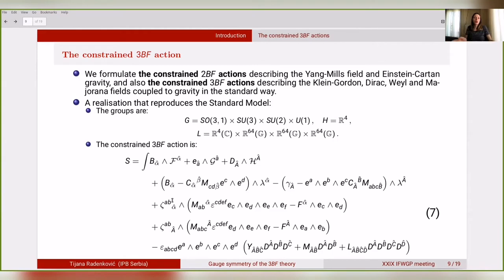Now that we formulated the 3-group that is responsible for the standard model coupled to gravity and the corresponding topological 3BF action, we have to impose the appropriate simplicity constraints on the variables present in the topological part of the 3BF action in order to obtain the desired dynamics of our fields. We formulate the constrained 2BF action describing the Yang-Mills fields and Einstein-Cartan gravity, and also the constrained 3BF actions describing the Klein-Gordon, Dirac, Weyl, and Majorana fields coupled to gravity in a standard way. This is the realization that reproduces the standard model, and the constrained 3BF action is given by equation 7. Here in the first row, we see the topological sector of the 3BF action, and here are the simplicity constraints that give us the desired dynamics of our fields.